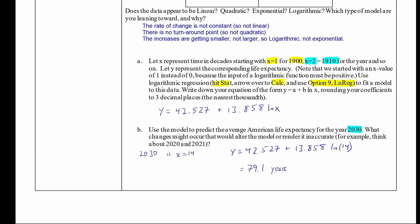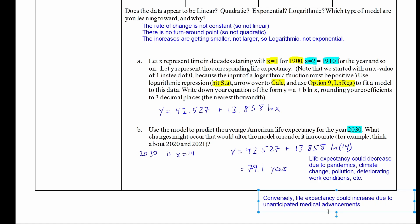Now this is what our model predicts based on past history. If life going forward continues as life has been in the past, this might be a good model. However, if there are changes to life expectancy based on things that have happened or will happen, then that might make our model inaccurate. For example, if we look at things that might influence our model, look at the years 2020 and 2021, life expectancy could decrease due to things like pandemics, climate change, pollution, deteriorating work conditions, etc. Conversely, life expectancy could increase due to things like unanticipated medical advances, improving health care, and things like that. Either of those could impact life expectancy in a way that our model does not predict and render our model inaccurate.